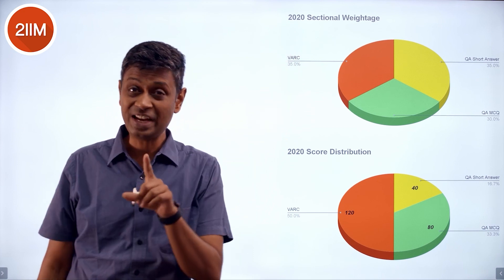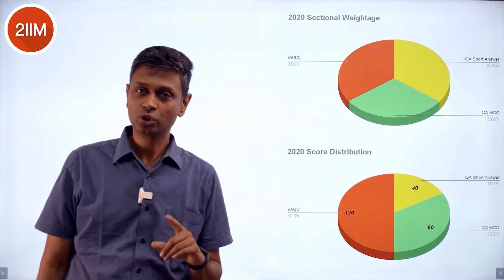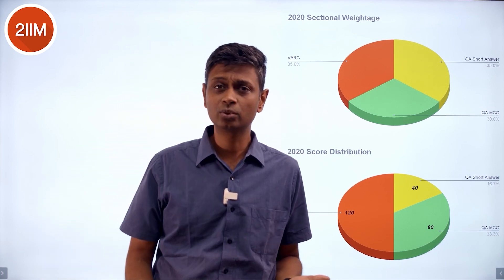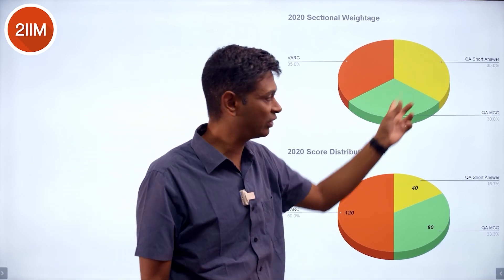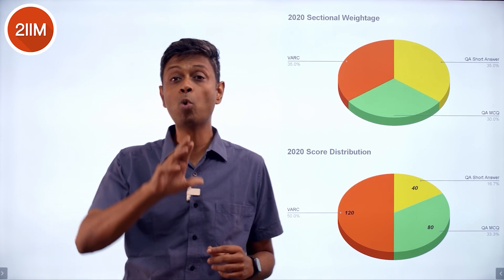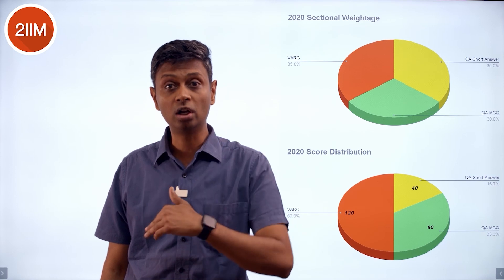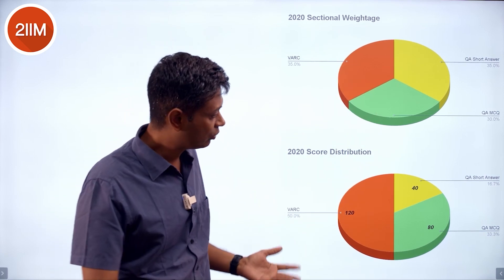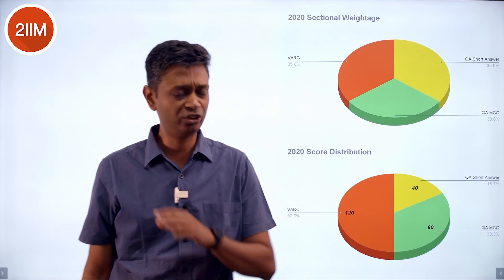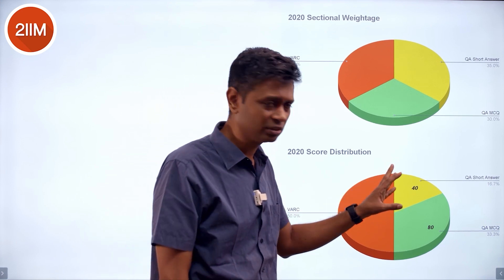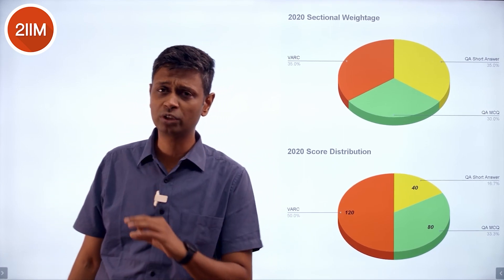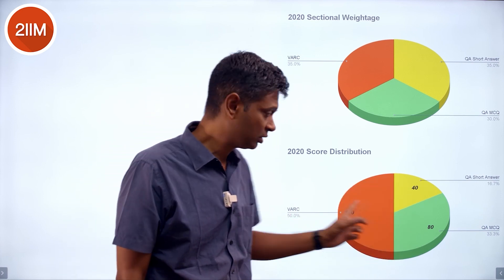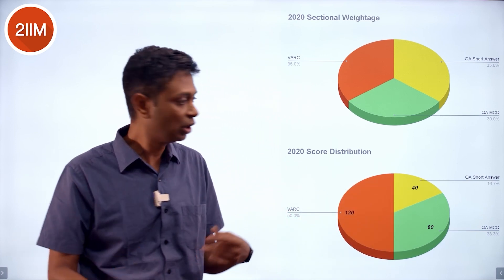In 2020, the weightages for the three sections were 35%, 30%, and 35% — almost one third each. So technically, quant's combined weightage was two thirds while verbal was one third. Within quant, short answer and MCQ had equal or slightly higher weight for short answer at 35 versus 30. The real weightage for getting an overall call is dominated by quant, not verbal. People tend to think that since verbal has 120 raw marks they should kill that section, but it does not work that way. You cannot just clear the cutoff on two sections and dominate one — actual candidate scores are typically much lower in short answer and MCQ than in verbal.